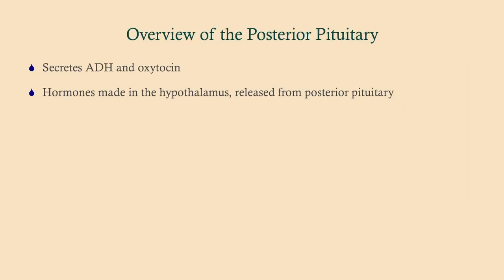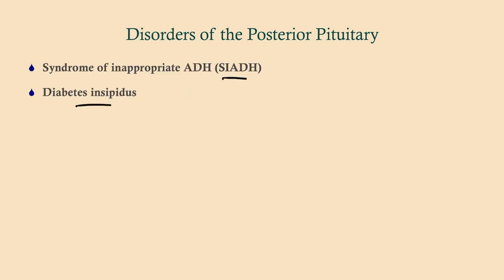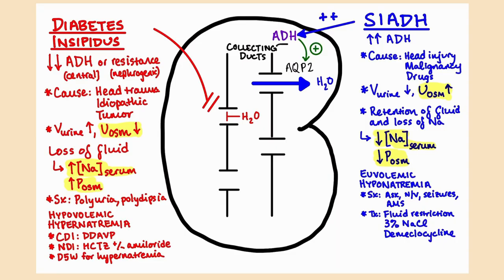In a previous video we talked about the anterior pituitary, which is higher yield because there are more disorders, especially for Step 2 and 3. The posterior pituitary has two hormones, but really only one is relevant for its disorders — ADH, antidiuretic hormone. Both ADH and oxytocin are actually made in the hypothalamus, travel down the infundibulum (pituitary stalk), and are stored in the posterior pituitary. We'll talk about SIADH and diabetes insipidus.